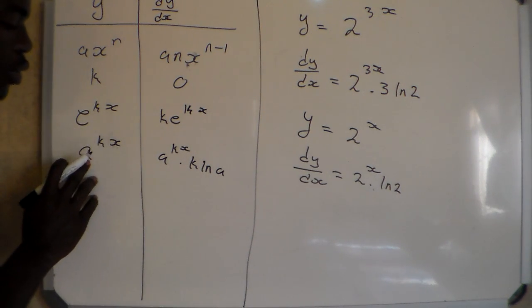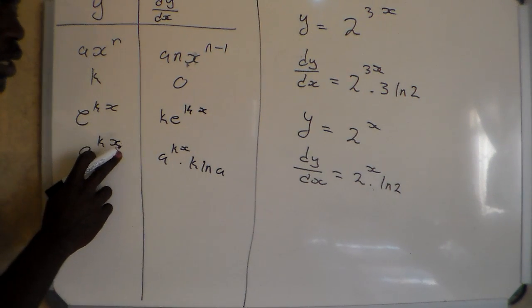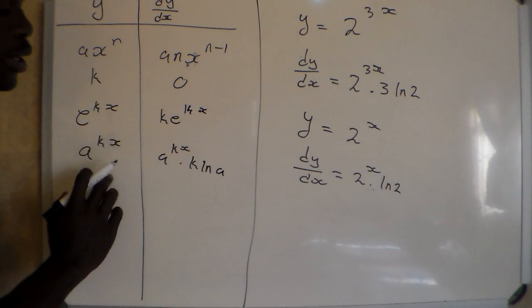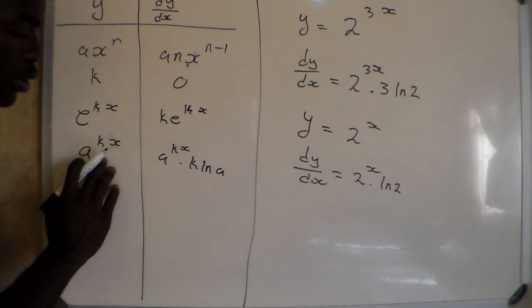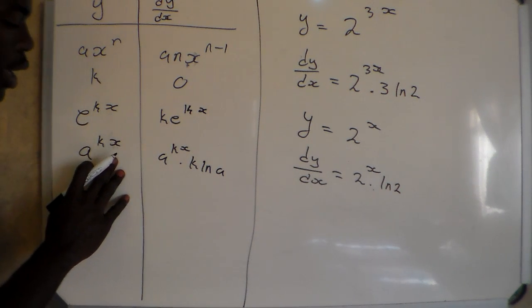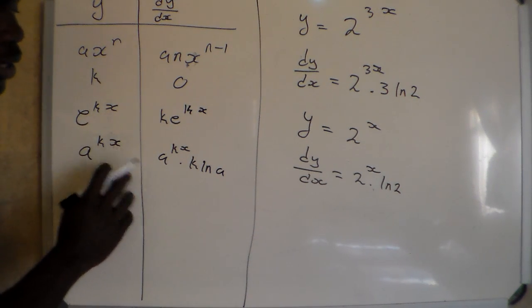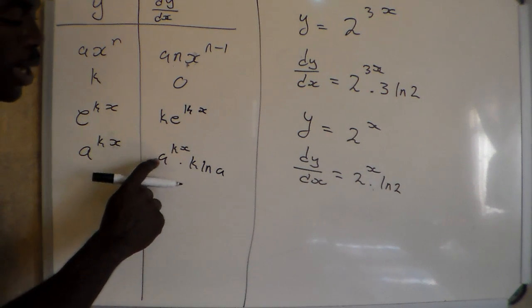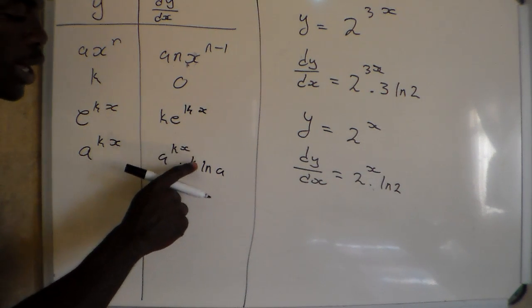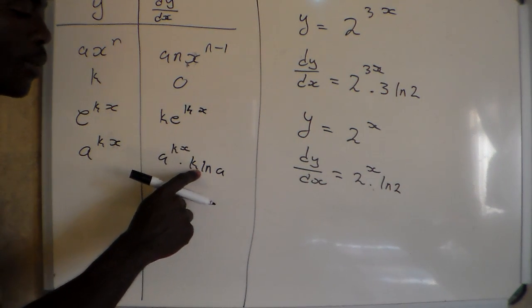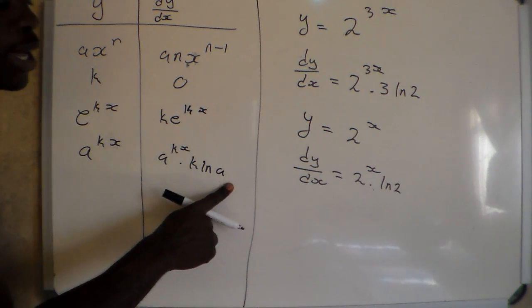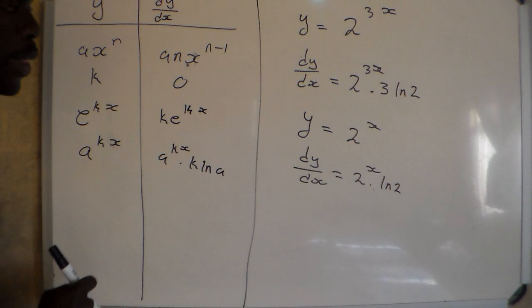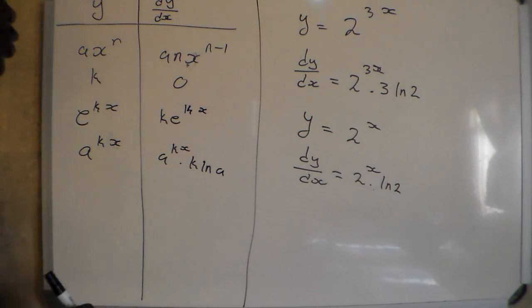So to summarise: if we have a to the power kx, then the derivative of a to the power kx is equal to k times a to the power kx multiplied by k·ln(a).